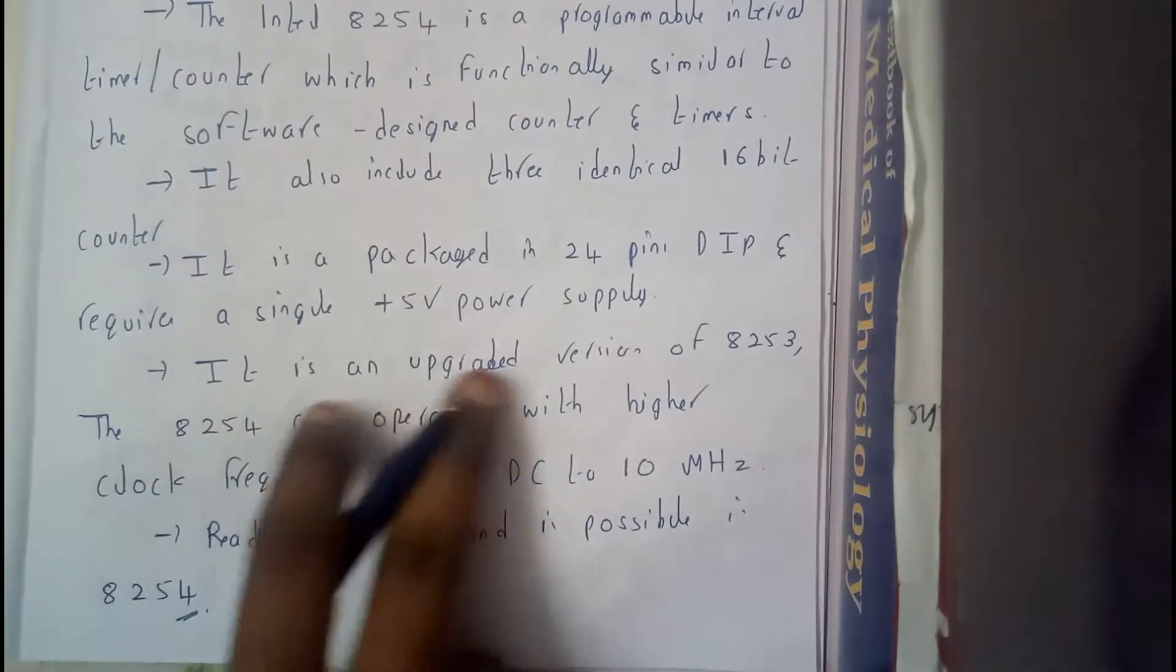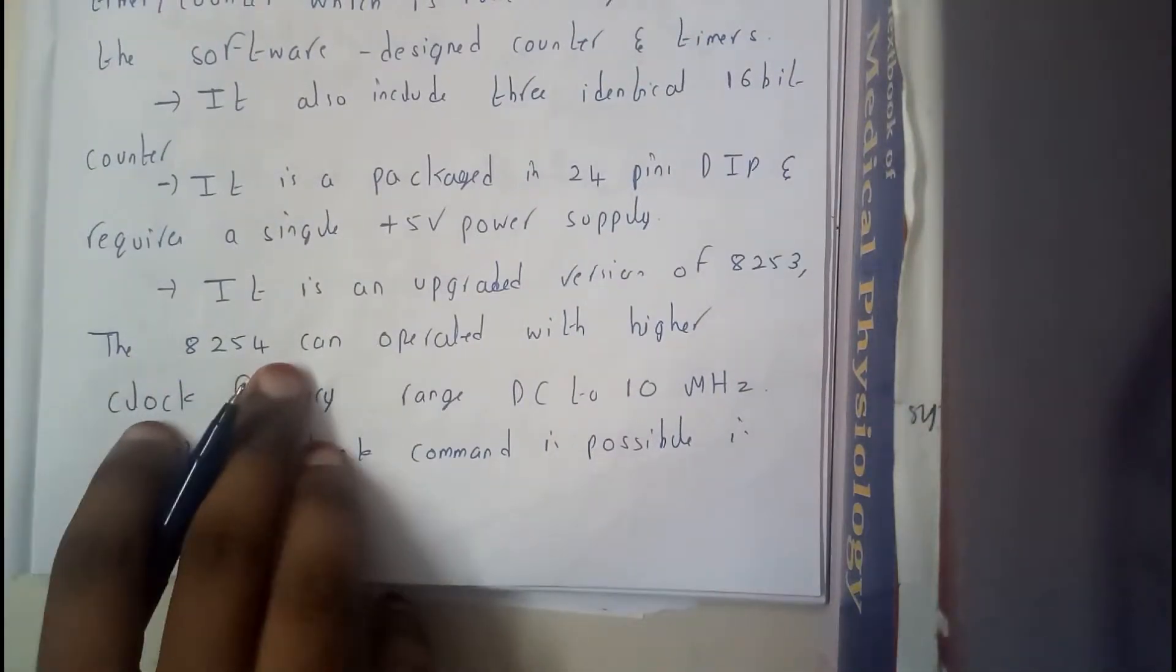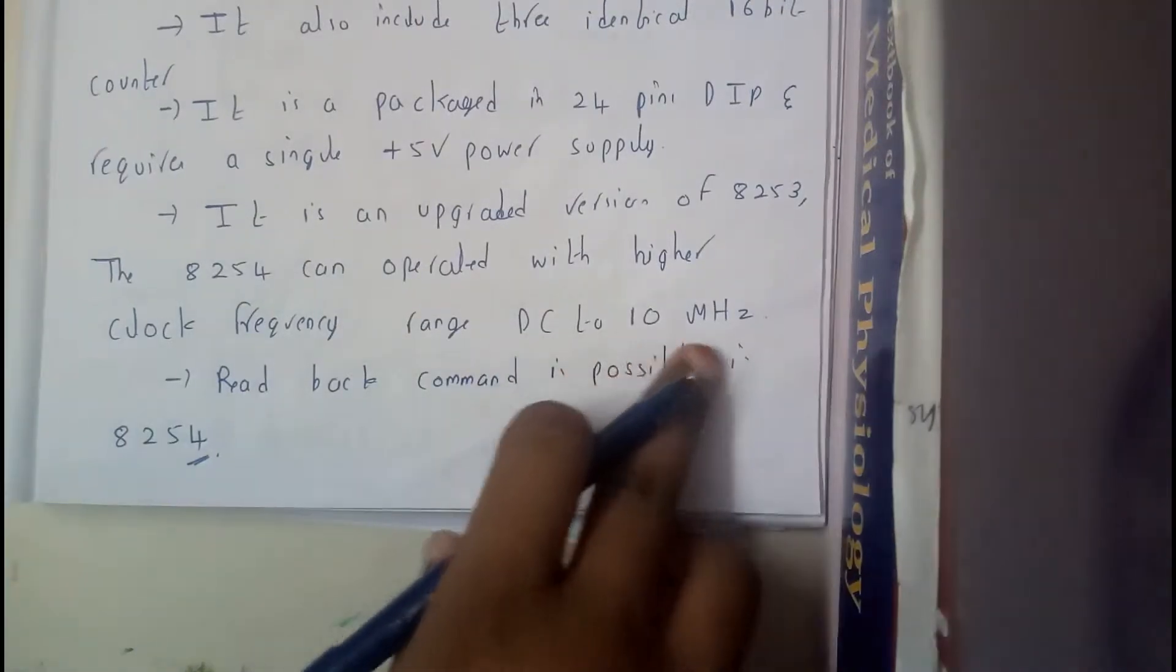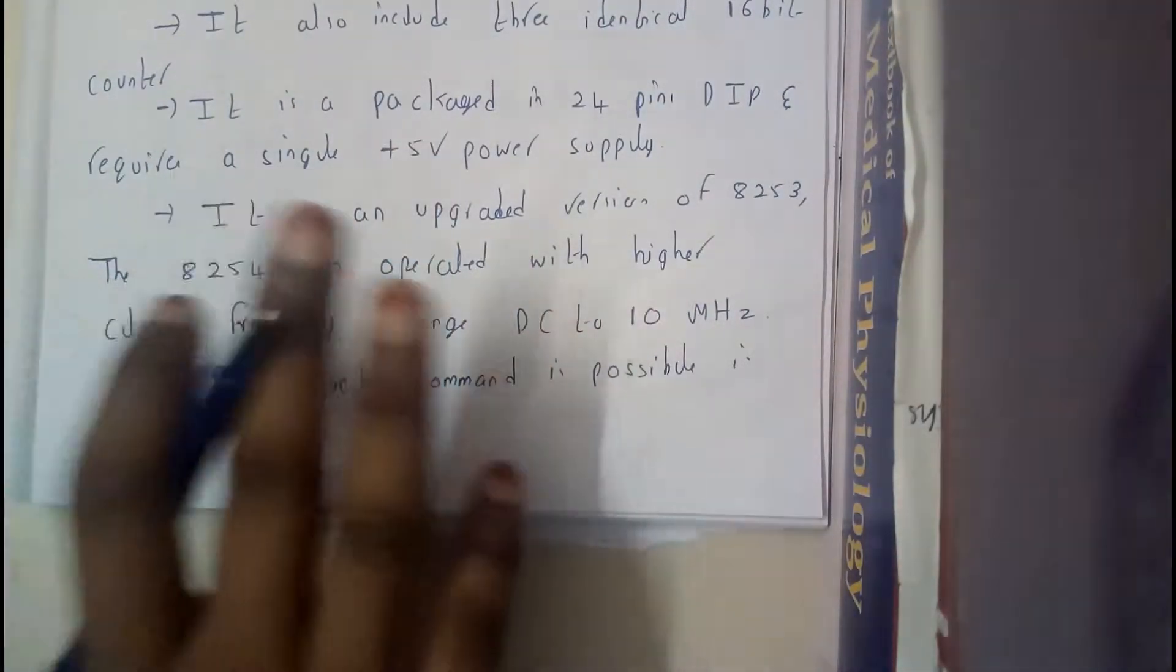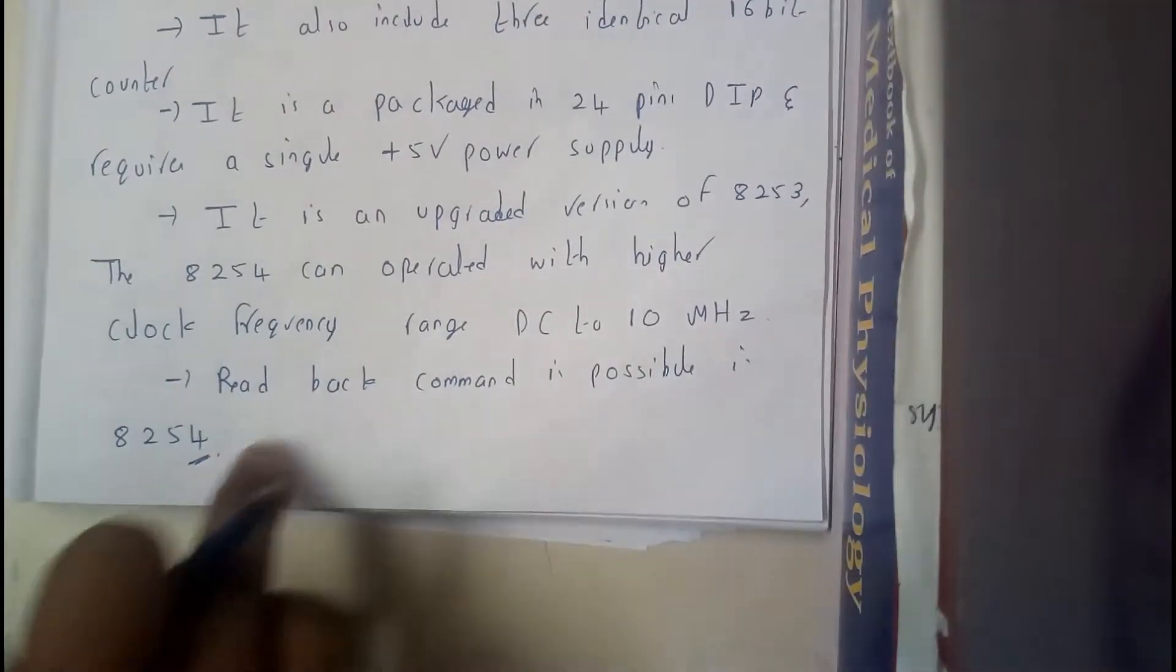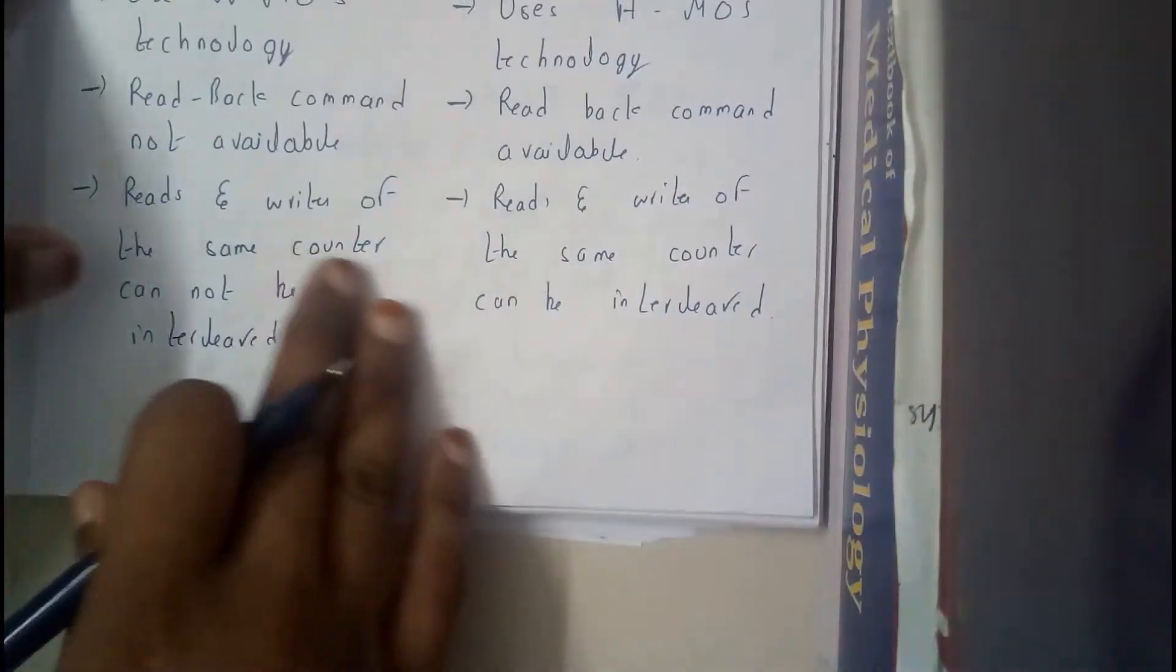It is an upgraded version of 8253 where the 8254 can operate with higher clock frequency ranging from DC to 10 MHz where that range is still 2.6 MHz only. So read back command is possible in 8254. So it can read in both the directions, so that's the major advantage of 8254.